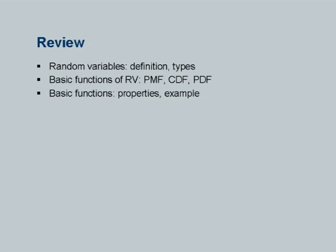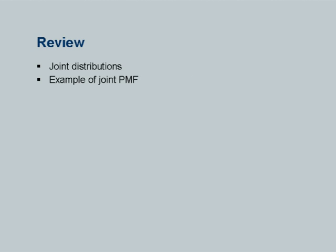You have gone through one or two examples on Bayes theorem. Then we discussed random variables, their definitions, and the basic functions of random variables for both discrete and continuous cases. We covered functions like the probability mass function, cumulative distribution function, and probability density function, and discussed their properties with examples. Finally, we just touched the joint distributions part with an example for the joint probability mass function.